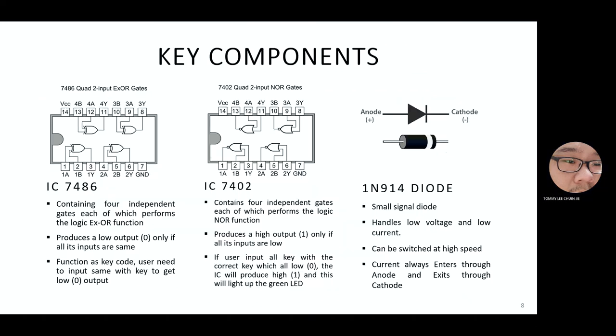Next, here's a brief explanation on the key components used in our project. First, IC7486, which is the exclusive OR gate. So, containing four independent gates, each of which performs the logic exclusive OR function. And this IC produces a low output, which is zero, only if its inputs are the same. And it will function as key code, where the user need to input the same with key to get the low output, which is zero.